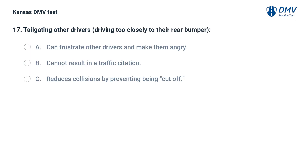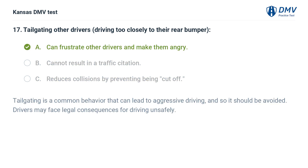Tailgating other drivers — driving too closely to their rear bumper: A. Can frustrate other drivers and make them angry. B. Cannot result in a traffic citation. C. Reduces collisions by preventing being cut off. The answer is A. Can frustrate other drivers and make them angry. Tailgating is a common behavior that can lead to aggressive driving, and so it should be avoided. Drivers may face legal consequences for driving unsafely.